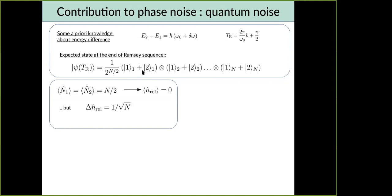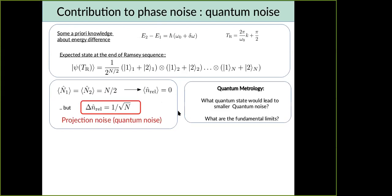But still all other possibilities, let's say having even all atoms in state one, are possible. There's some distribution of possible outcomes of this experiment. So this average imbalance is equal to zero but it has dispersion which is proportional to 1 over square root of N. Because just the number of atoms in one or in two follows binomial distribution. And variance of binomial distribution is square root of N. And because Nrel is imbalance divided by N, that's why the result is 1 over square root of N.